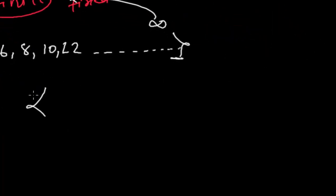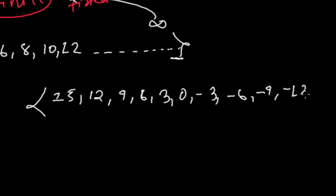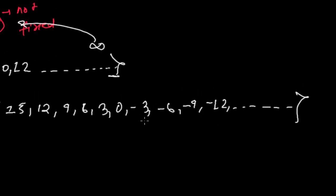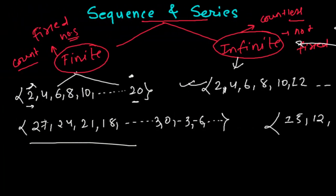For an infinite example, suppose we start from 15, then 12, then 9, then 6, then 3, 0, minus 3, minus 6, minus 9, minus 12, and so on. We don't know the ending point, so this is called an infinite sequence because there is no ending point.